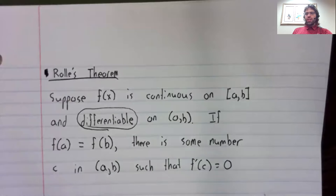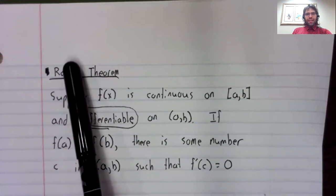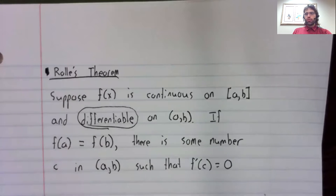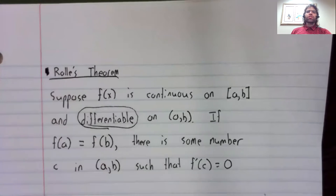Usually, if a theorem has a name, like the extreme value theorem or Rolle's theorem, that usually means the theorem is important.